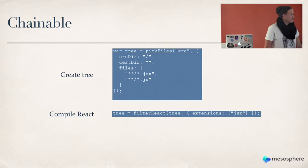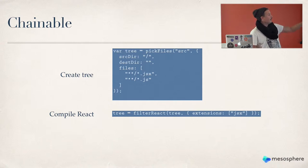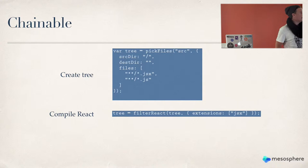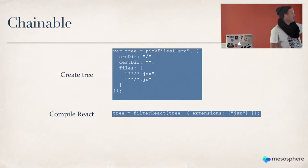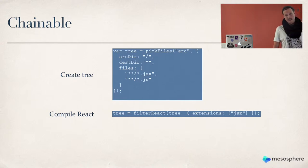This is the chainable part of Broccoli, which is really cool and makes it very readable. In this case it looks at files with the extension JSX and compiles them to JavaScript. So the tree that comes in has React files, and the tree that comes out only has JavaScript files.